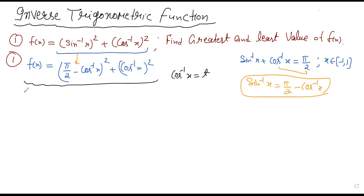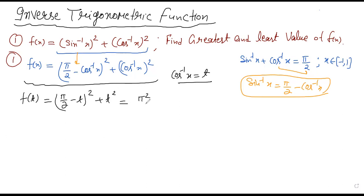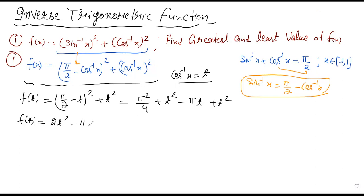So we substitute t = cos⁻¹x. The function in variable t becomes (π/2 − t)² + t². Expanding: π²/4 − 2·(π/2)·t + t² + t² = 2t² − πt + π²/4. We can write this as 2t² − πt + π²/4.